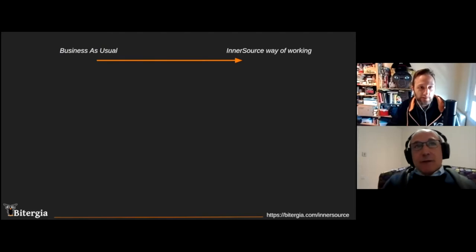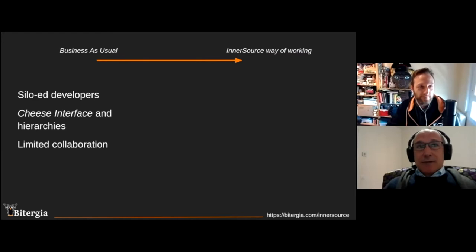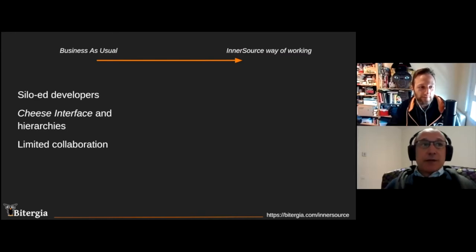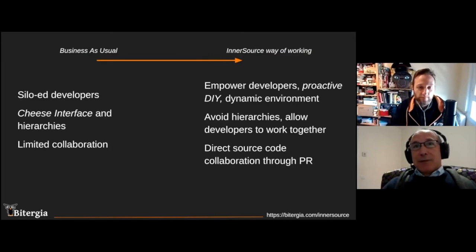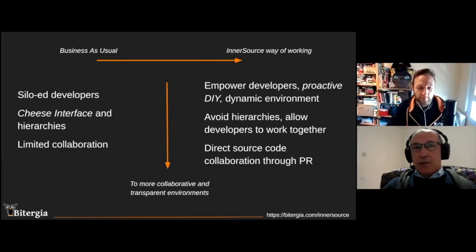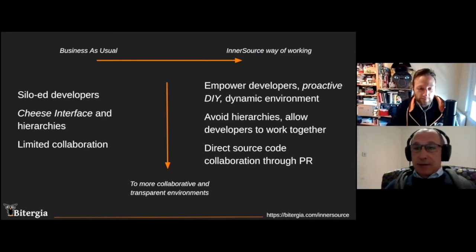What we find usually in the field is that corporations develop in clustered or siloed environments, separated from each other. This causes a lot of trouble, usually addressed using escalation methods, which limits collaboration. InnerSource comes to help and proposes to create a modern environment in which developers can proactively contribute to each other and collaborate without needing approval from management. This allows avoiding hierarchy workarounds, achieved through pull requests and other mechanisms usual for InnerSource and Open Source, aiming toward a more collaborative and transparent environment within corporations.